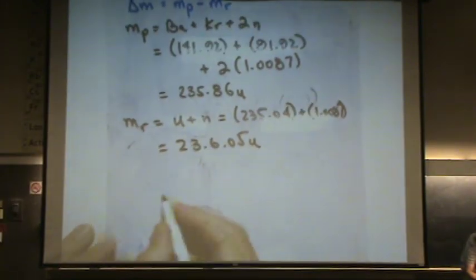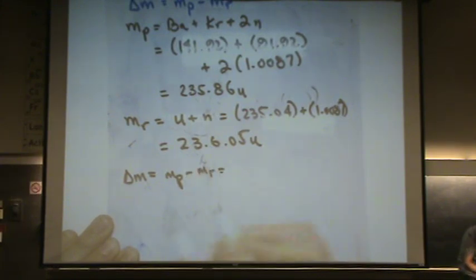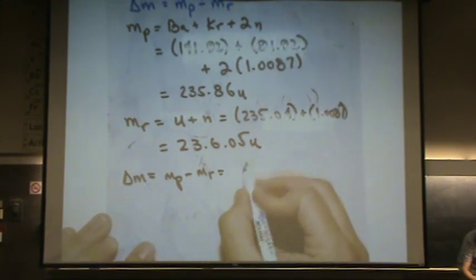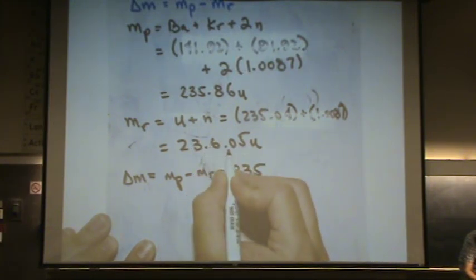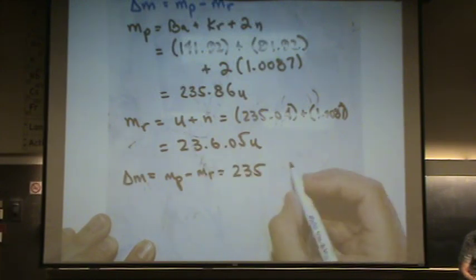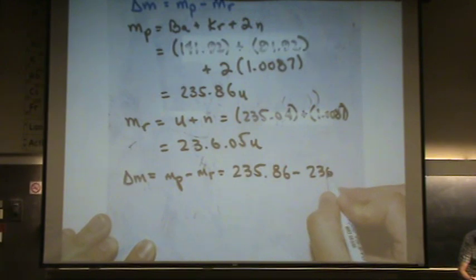Now, delta m, mass of the products minus mass of the reactants, this equals 235.86 minus 236.05. Notice we're going to get a negative number.